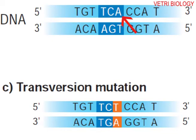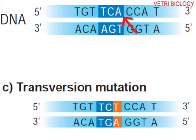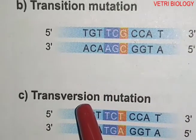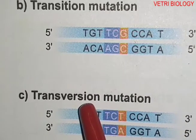Next is transversion mutation. In substitution mutation, both transition and transversion involve replacing one base pair with another — but in different ways. Transition involves purine-to-purine or pyrimidine-to-pyrimidine substitution, while transversion involves substitution between a purine and a pyrimidine.